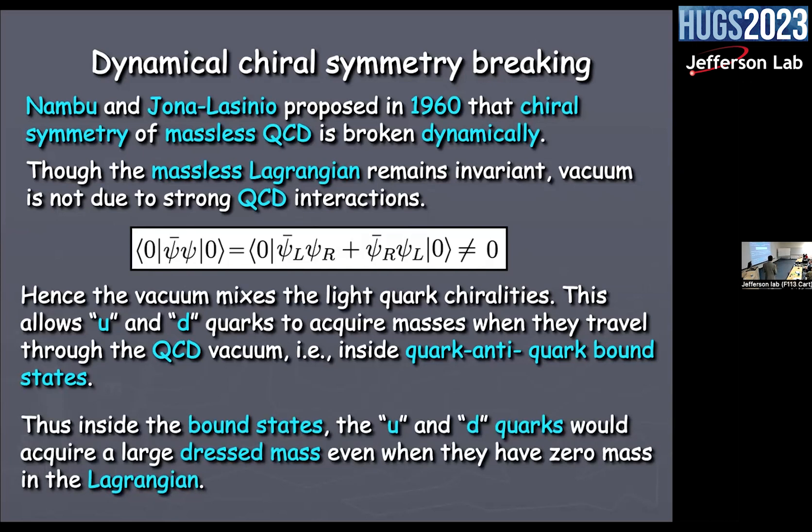That is quark-antiquark bound states inside nucleon, inside pion — that is a generation of a condensate. Inside the bound state, the u and d quarks would acquire a large dressed mass even when they have zero mass in the Lagrangian.